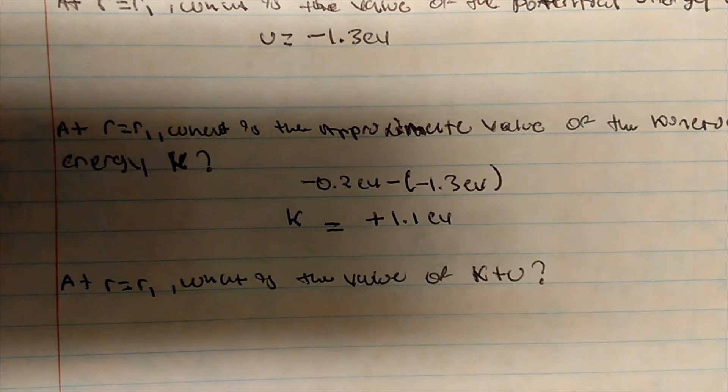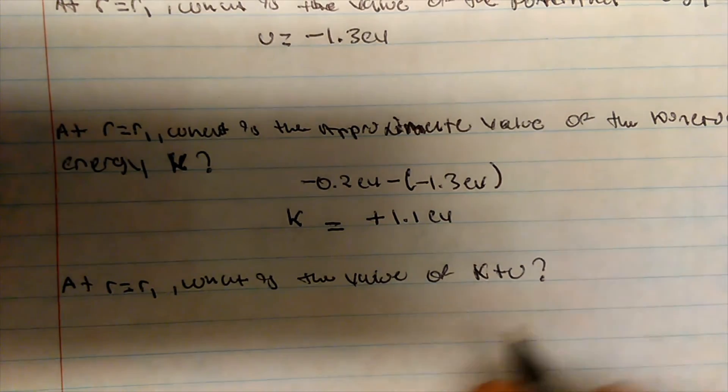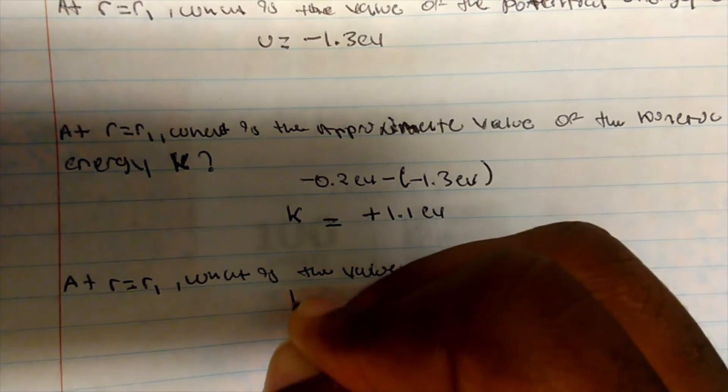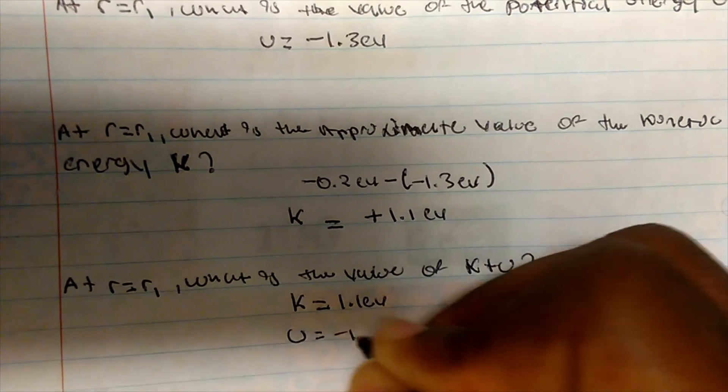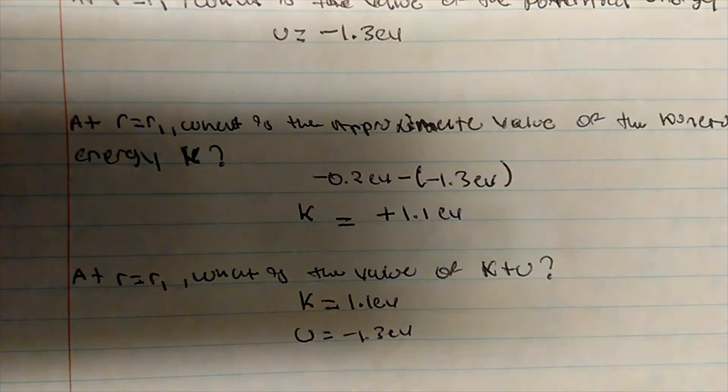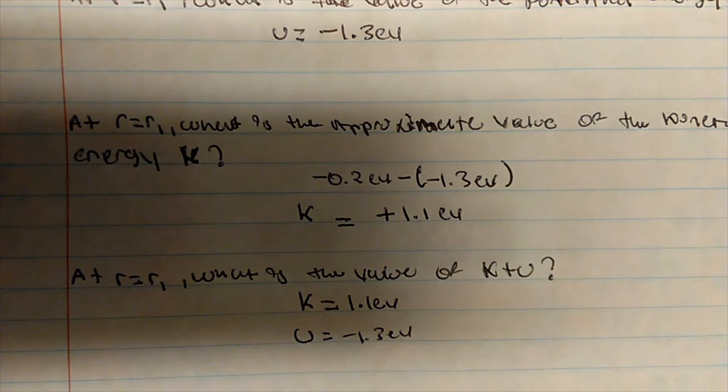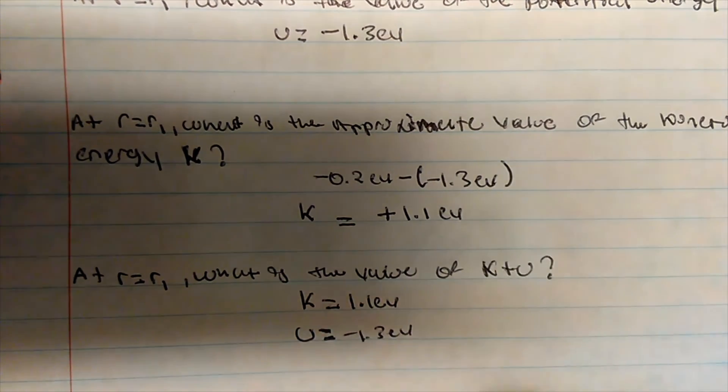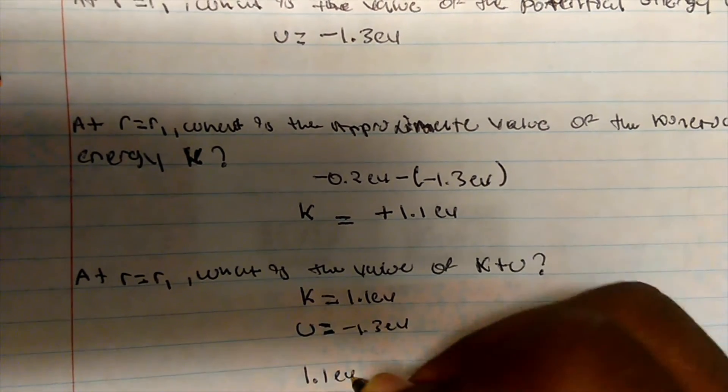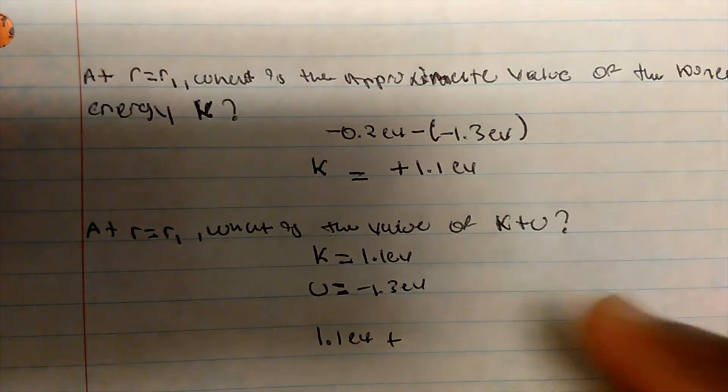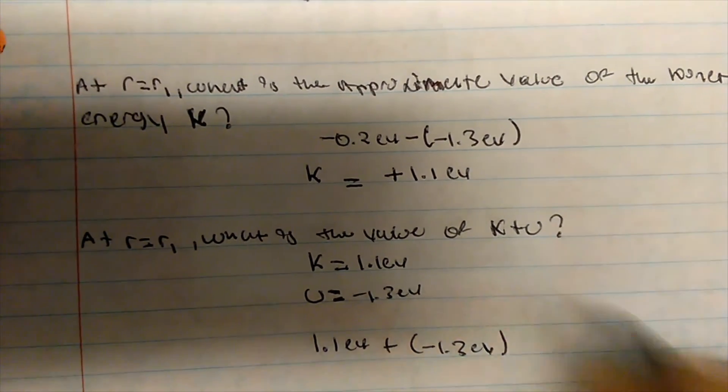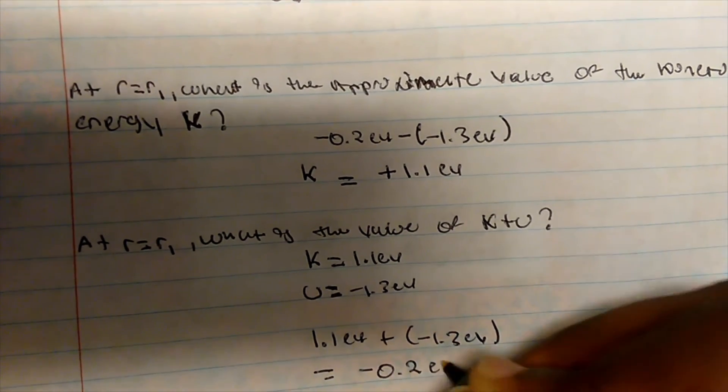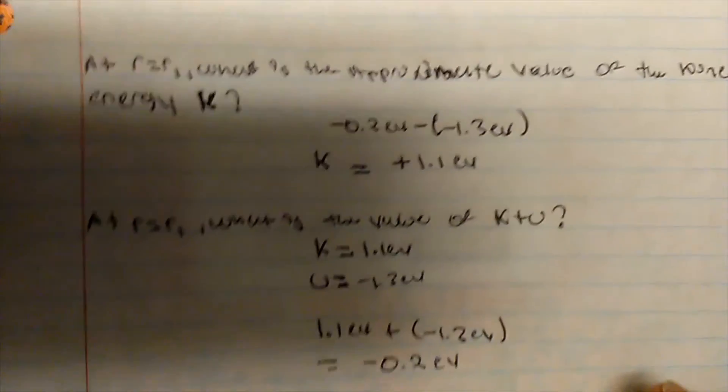I might ask you: what is the value of K plus U? We just had the kinetic energy, which is 1.1 eV, and the potential energy is negative 1.3 eV. So if I add 1.1 eV plus negative 1.3 eV, I get negative 0.2 eV. That would be the value of my K plus U.